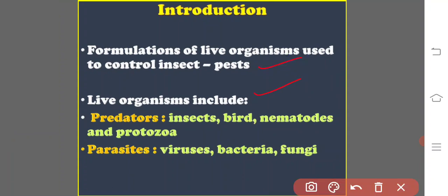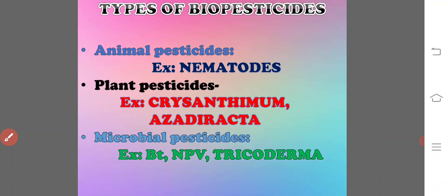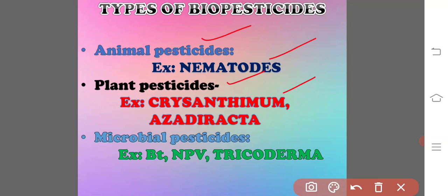Live organisms used in biocontrol include predators and parasites. Predators include insects, birds, nematodes, and protozoans. Parasites include viruses, bacteria, and fungi. There are different kinds of biopesticides: animal pesticides (e.g., nematodes), plant pesticides (e.g., Chrysanthemum and Azadirachta), and microbial pesticides such as Bacillus thuringiensis, nuclear polyhedrosis virus (NPV), and Trichoderma.